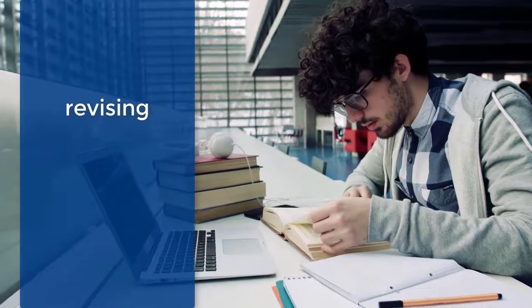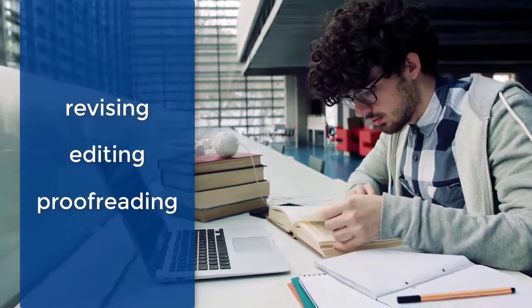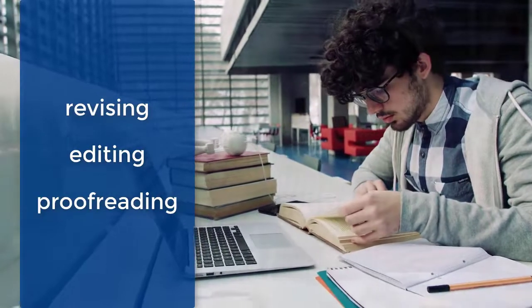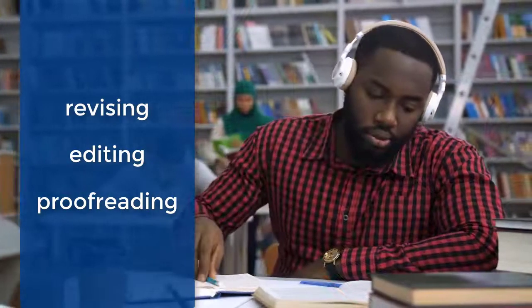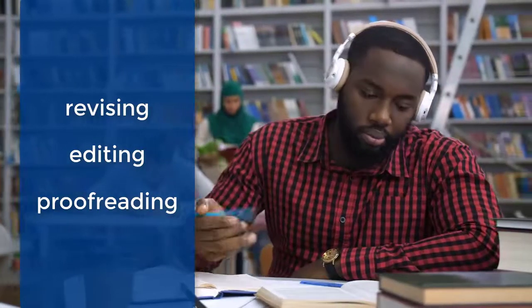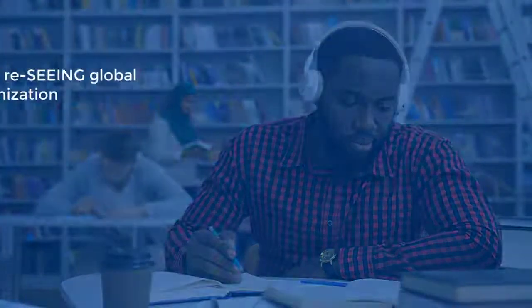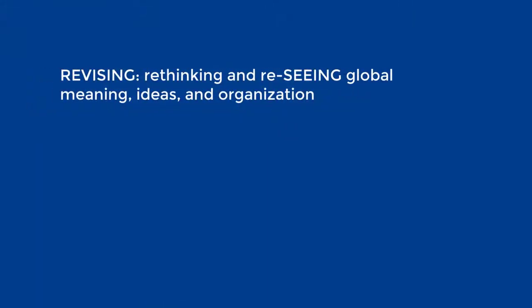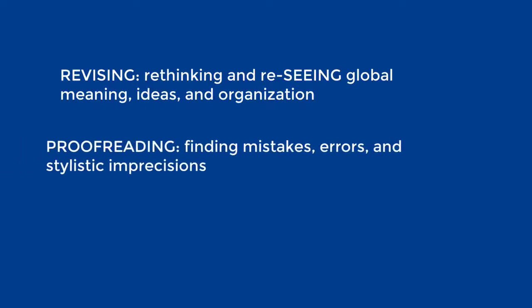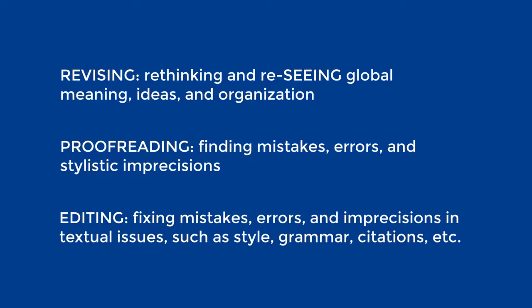When we talk about revising, editing, and proofreading, it's important to note that these three words describe very different activities that happen at different stages of writing a paper. Revision means what its name implies: to look at your paper in a different way. Proofreading and editing both refer to finding and fixing errors in your writing, with editing encompassing a focus on style, grammar, and other concerns.